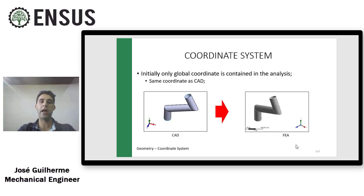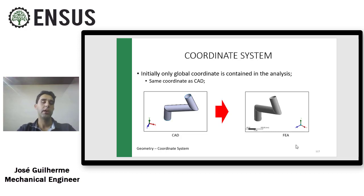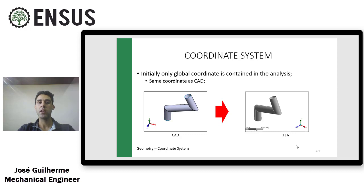For example, you import a CAD model and this model does not have the coordinate system aligned to the direction you want to create forces, or you want to check results in a specific direction. Then you'll have to create a new coordinate system based on the directions you want to use, and with this new coordinate system you can define your loads, supports, and check results.